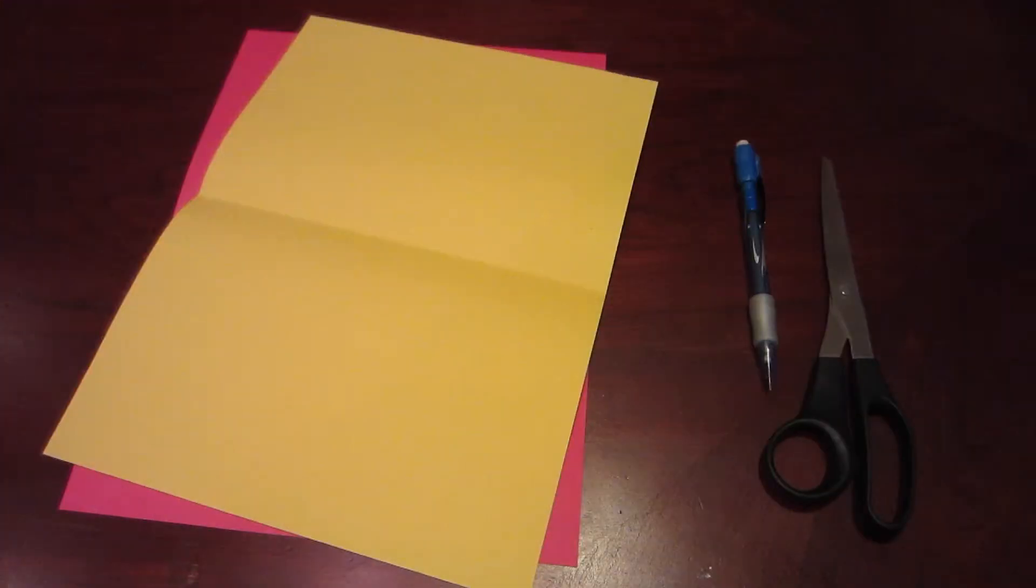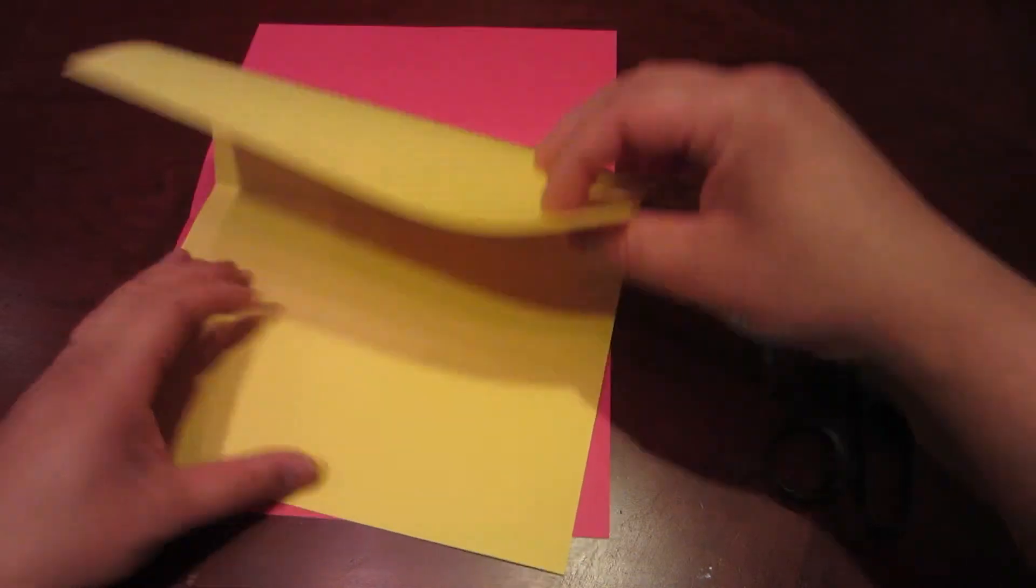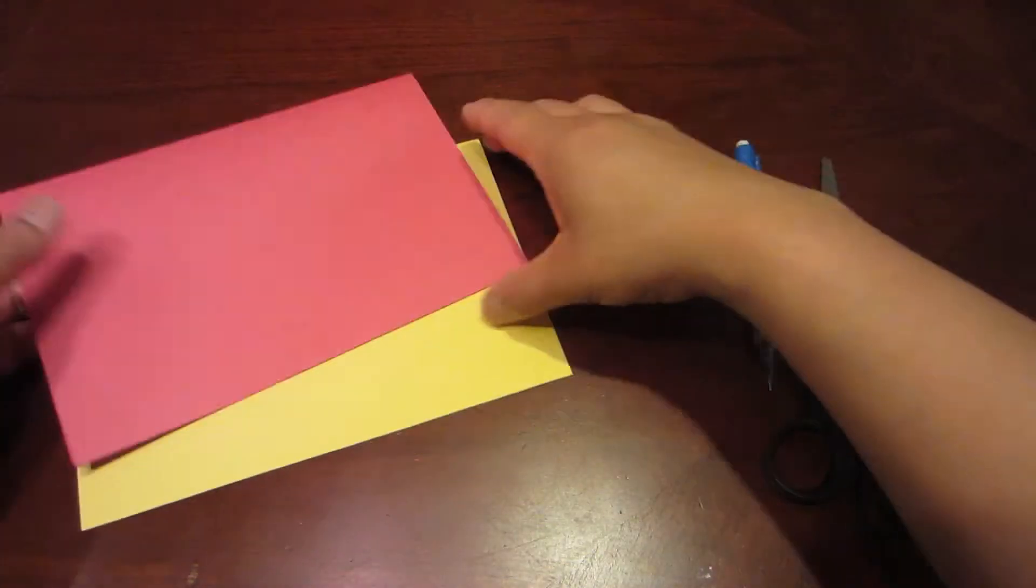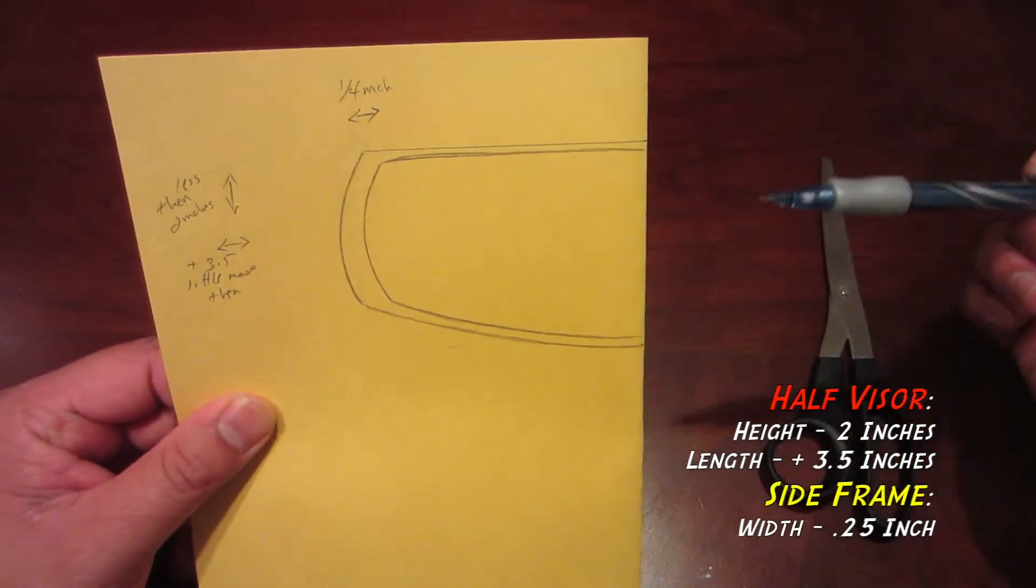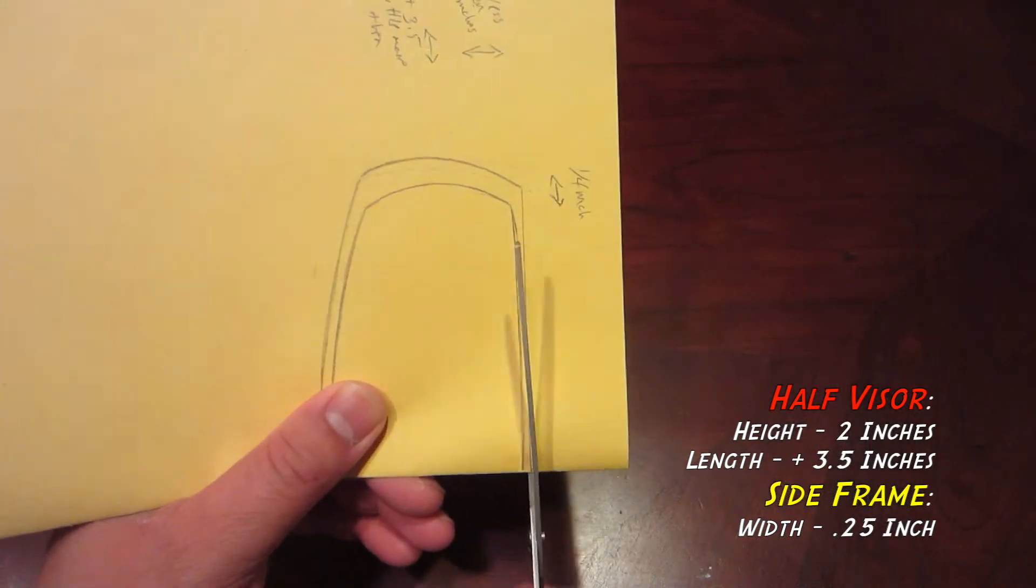Now let's make the visor. Fold your two pieces of colored paper in half, then put them together, red on the inside and yellow on the out. Next, draw your visor like this. Measurements are posted. When ready, start cutting out.